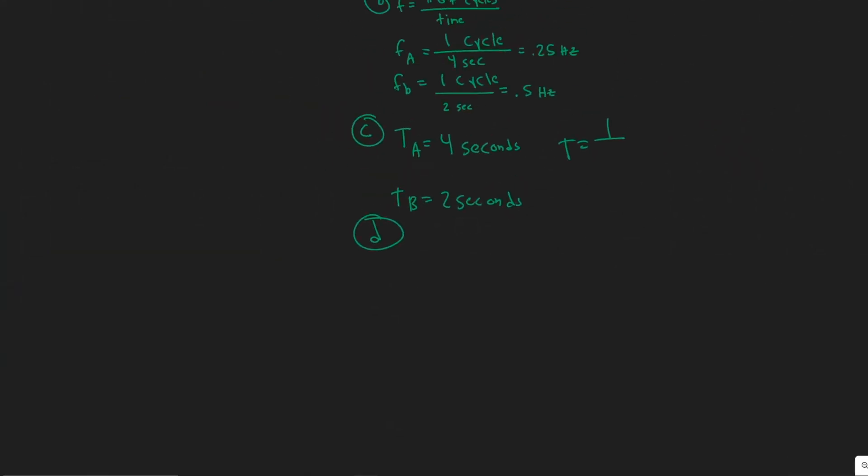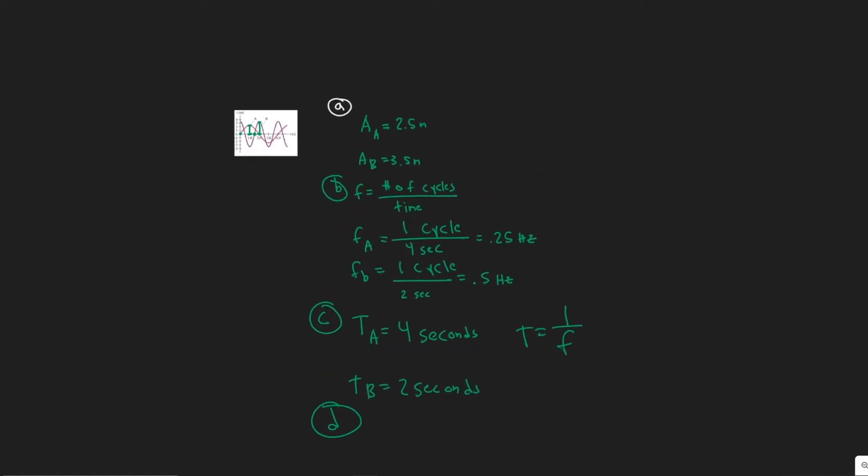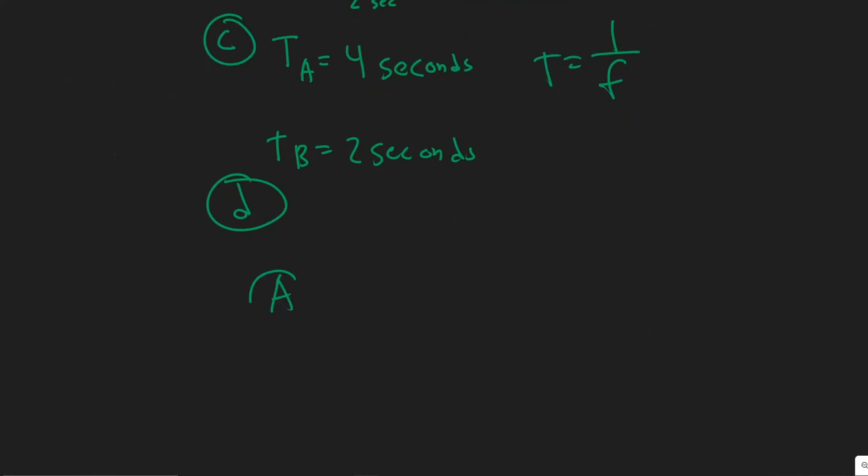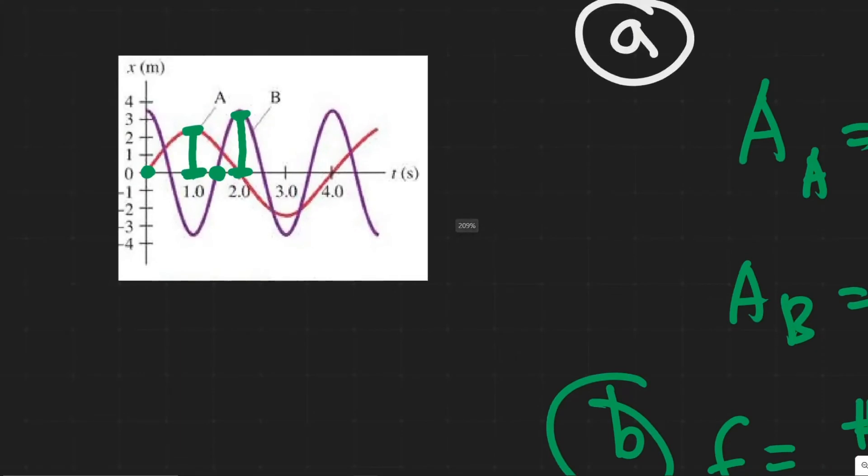So for D, we're going to be finding the equations for both A and B in form of sine or cosine. And so we're going to have to decide which one it is based on what type of curve it looks like. So I think the easiest way is just to start with A. So looking at curve A, I can see that it resembles the sine function more because it starts at zero. So we're going to use sine for this one.